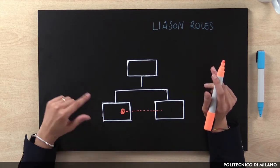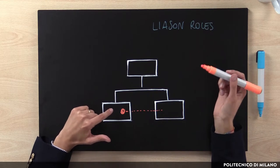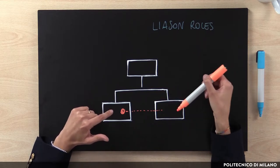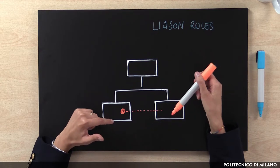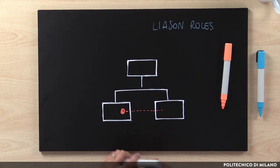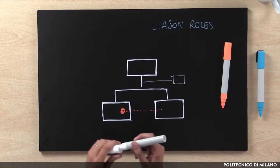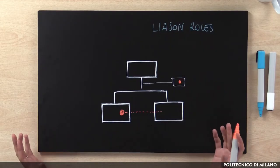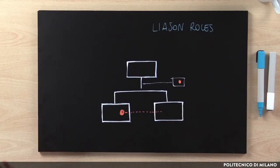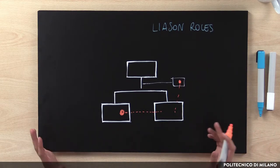For example, in the production unit we can formally identify a person that is in charge of coordination with R&D, in order to align R&D strategies with the production technology of the organization. Similarly, we can have a liaison role between a staff unit and a line unit. The typical example is an HR person that is dedicated to support another unit, such as the sales unit, in managing the workforce.